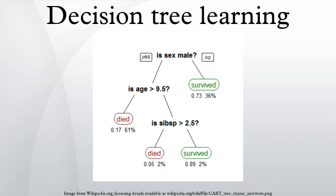Algorithms for constructing decision trees usually work top-down by choosing a variable at each step that best splits the set of items. Different algorithms use different metrics for measuring best. These generally measure the homogeneity of the target variable within the subsets. These metrics are applied to each candidate subset, and the resulting values are combined to provide a measure of the quality of the split. Gini impurity, used by the CART algorithm, is a measure of how often a randomly chosen element from the set would be correctly labeled if it were randomly labeled according to the distribution of labels in the subset. Gini impurity can be computed by summing the probability of each item being chosen times the probability of a mistake in categorizing that item.